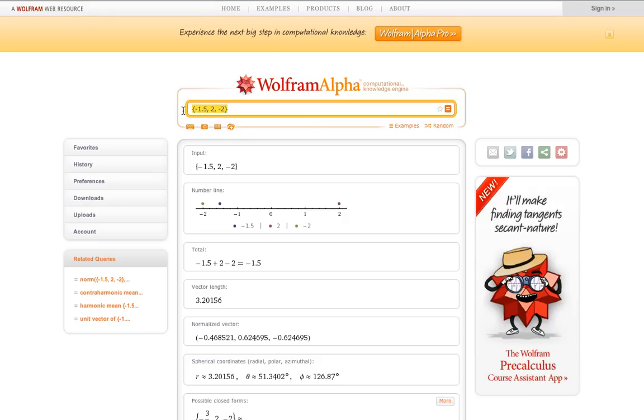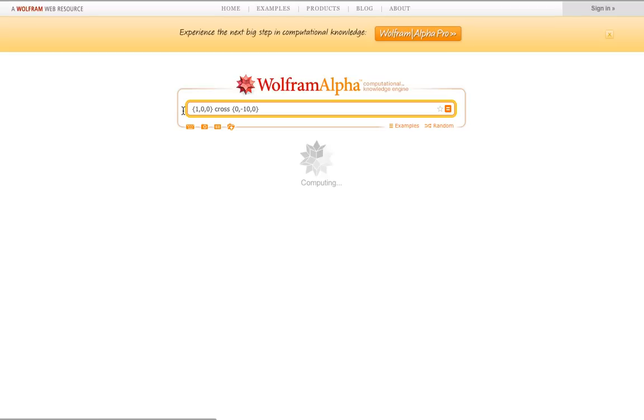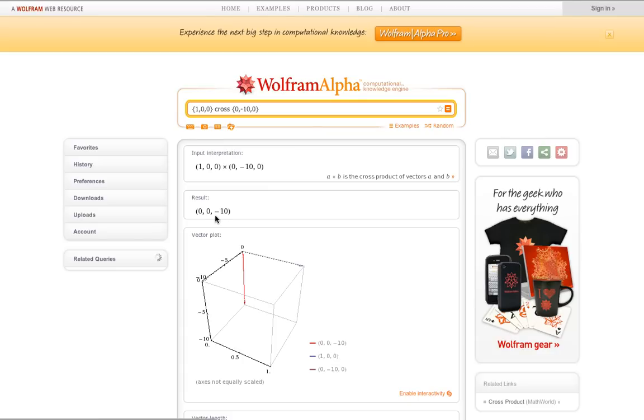R_AW we decided was (1, 0, 0) cross the weight vector, which is (0, -10, 0). And we let it chug on that for a minute. And it gives us results of 0 i hat plus 0 j hat minus 10 foot-pounds k hat.